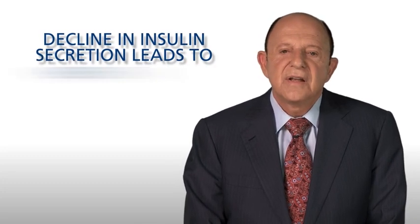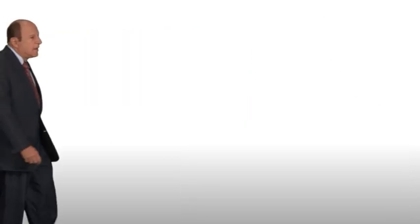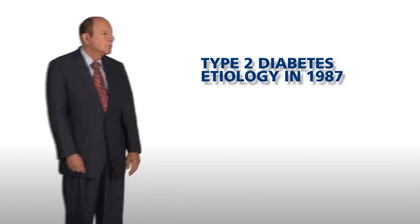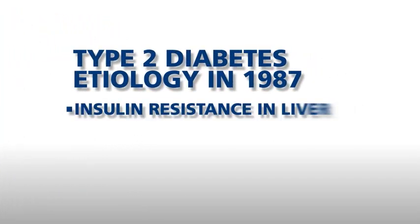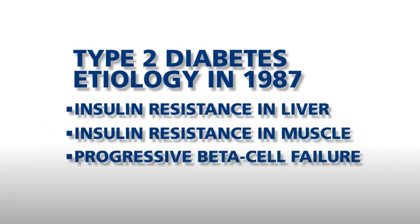Following a meal, the majority of the carbohydrate in the meal, particularly glucose, is taken up and disposed of in the muscle. In the face of muscle insulin resistance, the decline in insulin secretion leads to postprandial hyperglycemia. Thus, in 1987, the etiology of type 2 diabetes was quite simple: insulin resistance in liver, insulin resistance in muscle, and progressive beta cell failure. However, we know that there are at least five additional defects that need to be addressed.